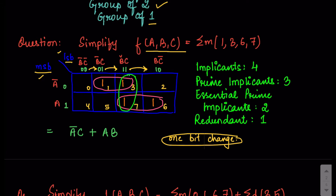After making the numberings we write down a 1 at the positions corresponding to the given min terms: 1, 3, 6, and 7. Since we are working with min terms we note a 1 only at those positions. Then we move to the next step of making the groups.